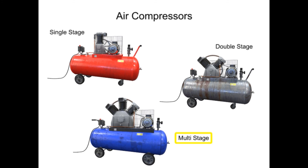On these larger compressors, cooling may take place by circulating water instead of air. To reach a pressure of 2,500 PSI, as many as 6 or 7 stages may be needed with cooling between each stage. Their versatility makes compressors one of the primary components in air production.